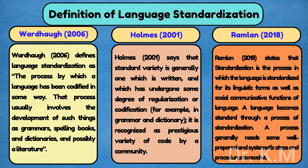Holmes (2001) says that a standard variety is generally one which is written, and which has undergone some degree of regularization or codification — for example, in grammar and dictionary — and it is recognized as a prestigious variety of code by a community. Ramelland (2018) states that standardization is the process in which the language is standardized for its linguistic forms as well as social communicative functions of language.